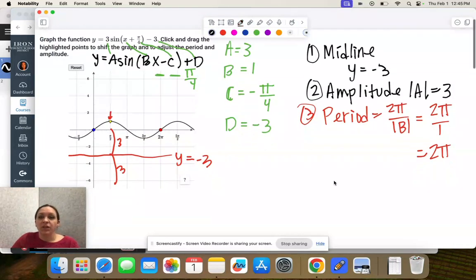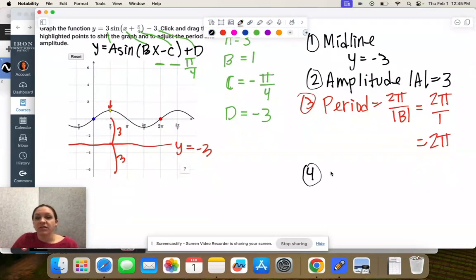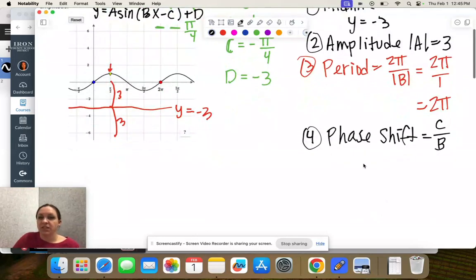The fourth thing we look at is the phase shift. That's the horizontal shift of the graph, left or right. And that's equal to C over B. So C is negative π/4, B is 1. So our shift is negative π/4.